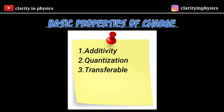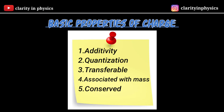Next, charge is associated with mass — that is, charge cannot exist without mass, but the reverse is not true. Next, charge is conserved — it can neither be created nor destroyed. The last property is that charge is invariant — it is independent of the velocity of the charged particle.